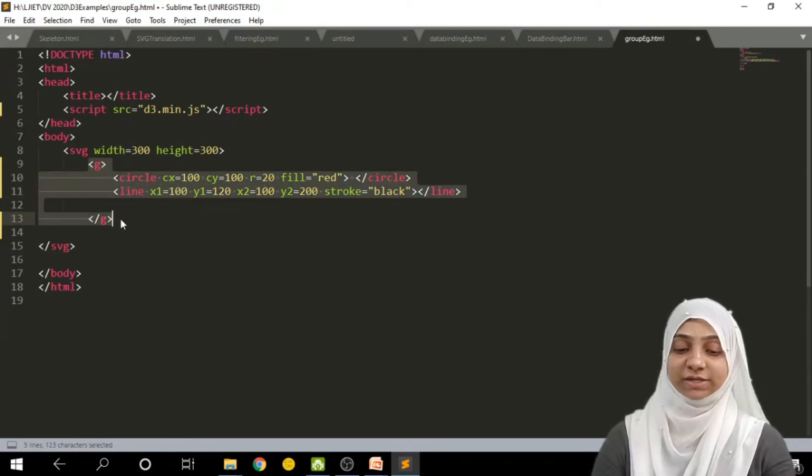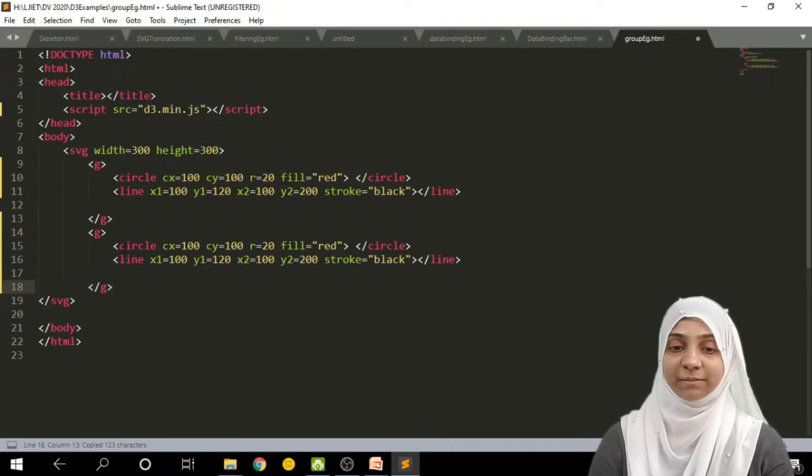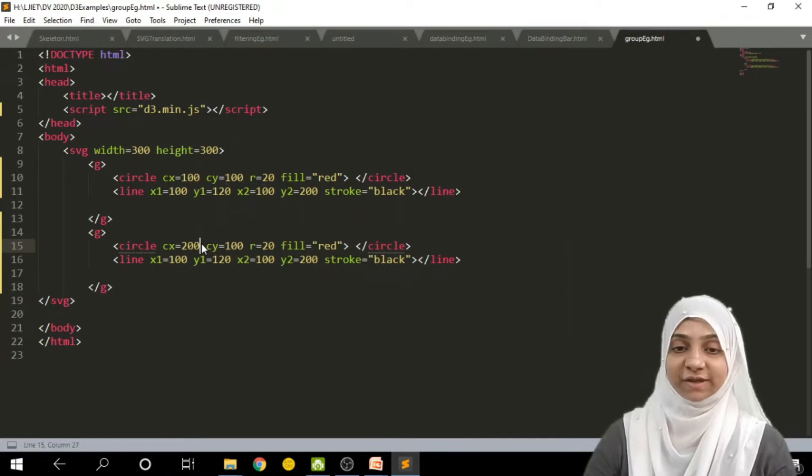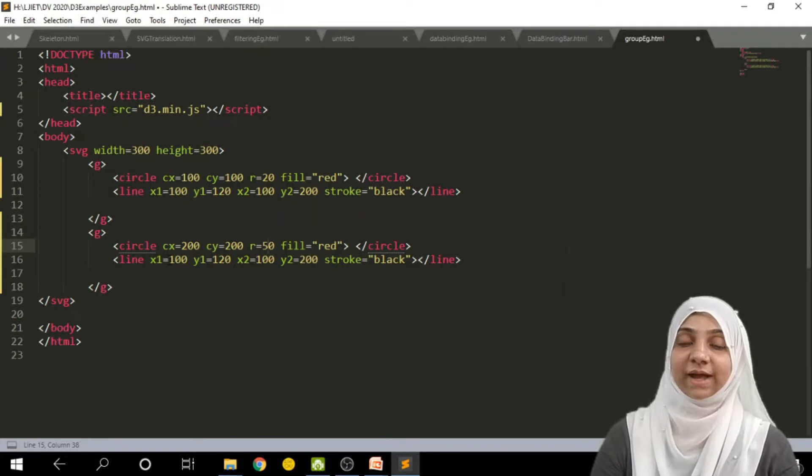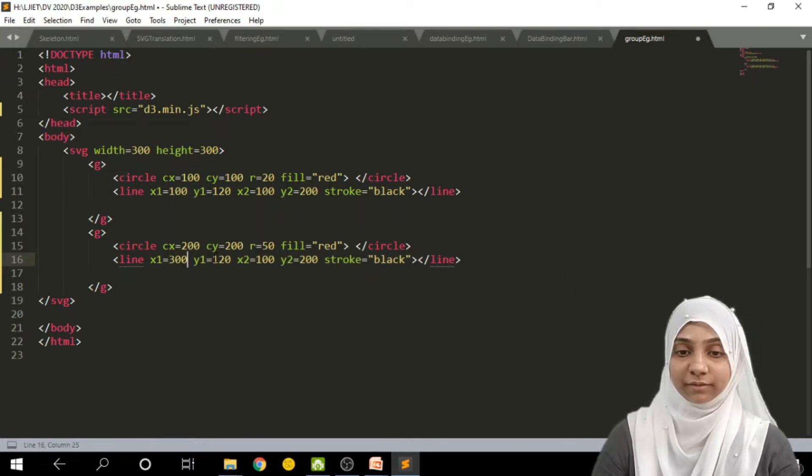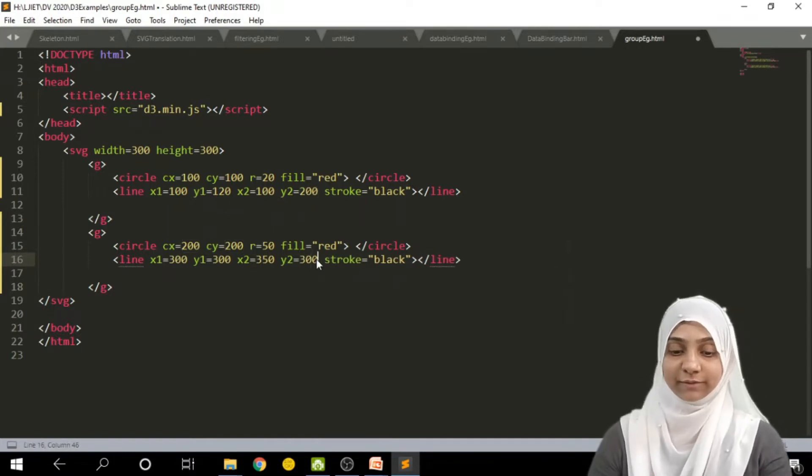Now, these two elements are under a single group. We can also create another group like this by simply copy and pasting. I may change the element coordinates, say, for example, they are from 100, 200, 200, that is the center and the radius of the circle is 50. And I can draw another line from 200, 200, 300, 300 to another point, that is 350, 300.